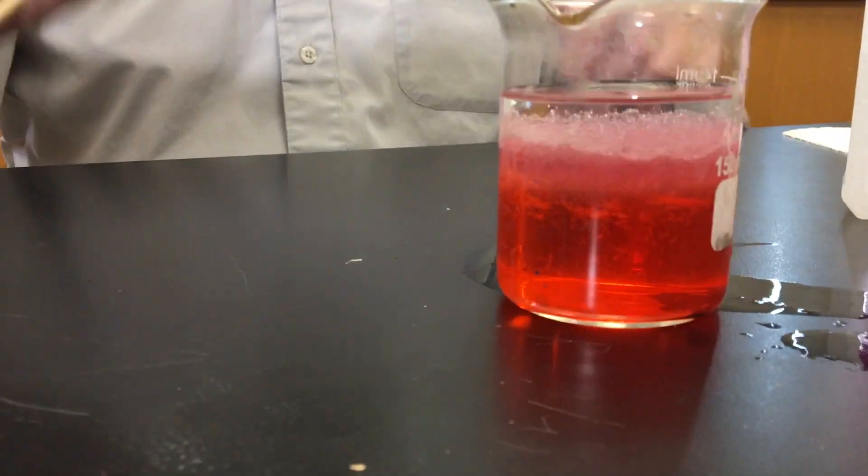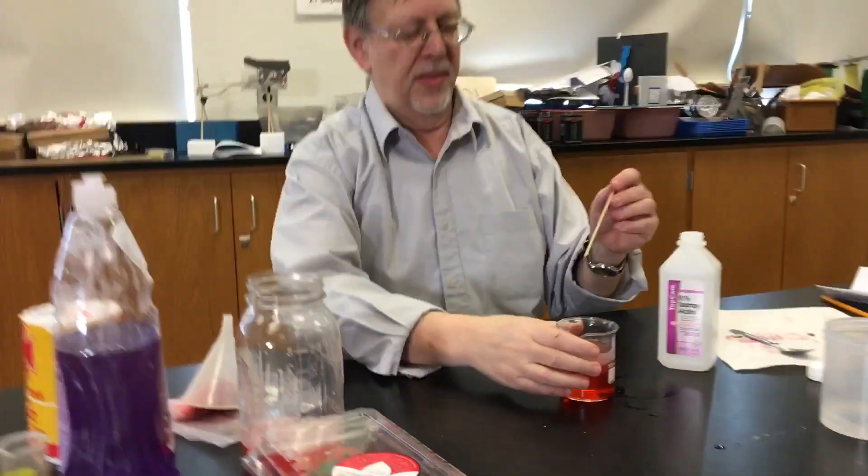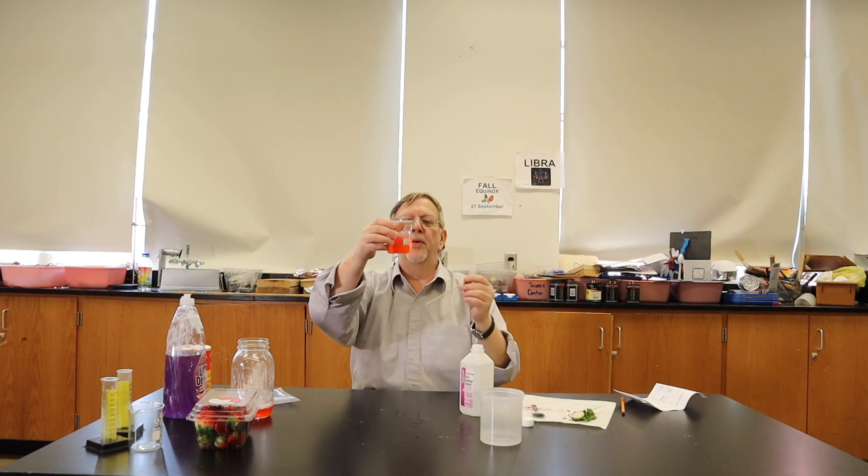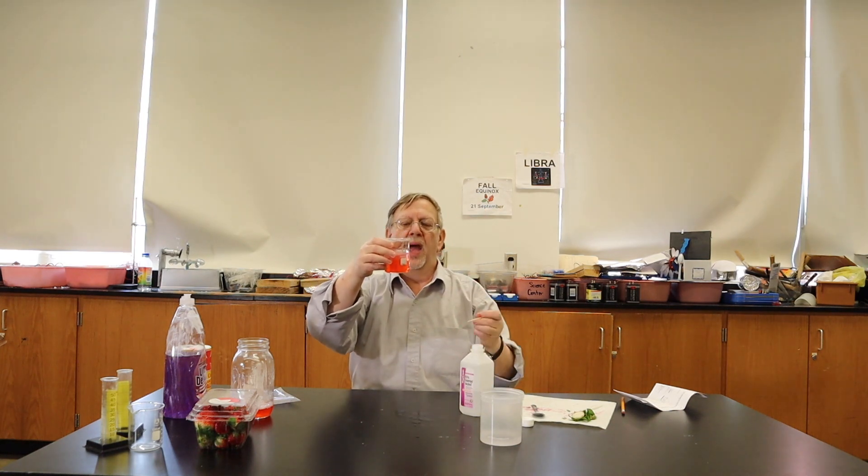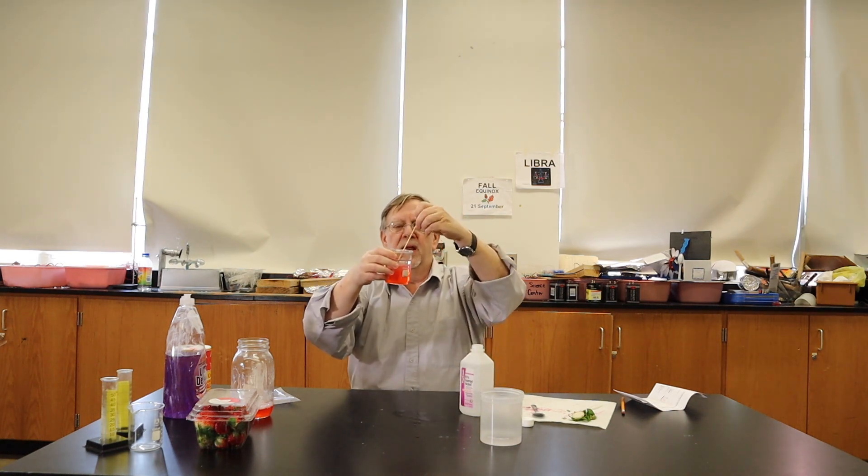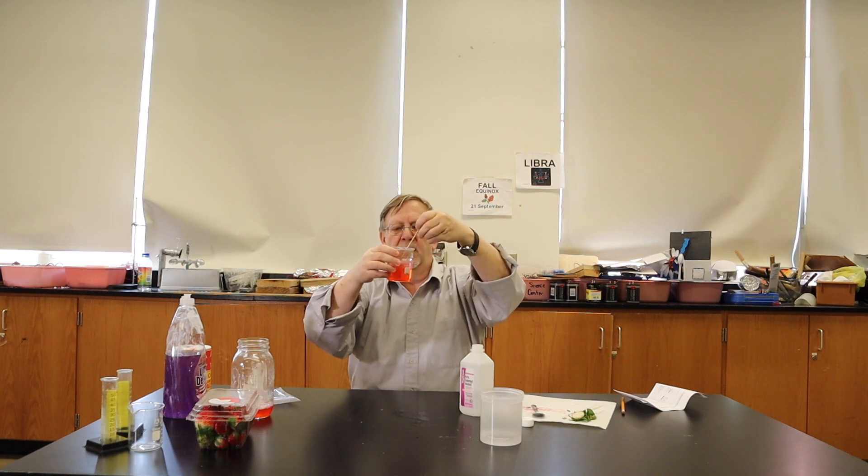With a stick, alcohol is on top, strawberries down at the bottom. And in the middle there is DNA. So we try to get some of this DNA out by twirling the stick around.